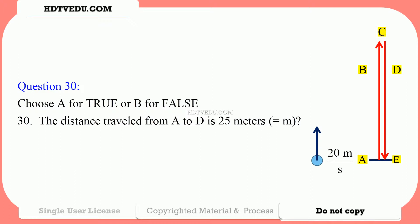The distance traveled from A to D, as in David, is 25 meters. The distance traveled has to be distance traveled from A to B, plus distance traveled from B to C, plus distance traveled from C to D. Distance is a scalar.